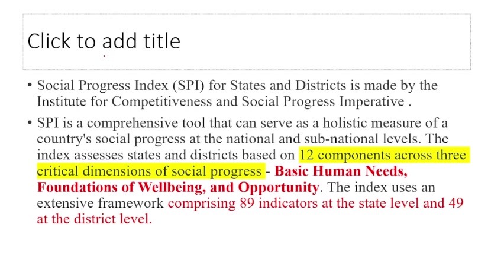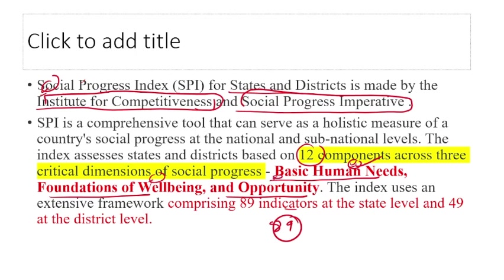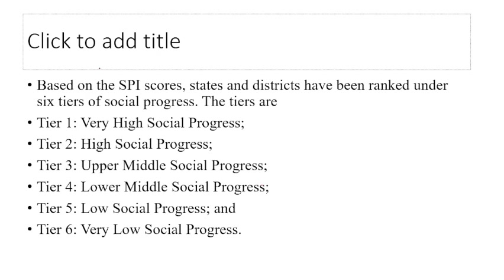The Social Progress Index (SPI) is important, especially for Jammu and Kashmir. The SPI for states and districts is made by the Institute for Competitiveness and Social Progress Imperative — private organizations. It covers 12 components across 3 critical dimensions: basic human needs, foundations of well-being, and opportunity — with 89 indicators. The data for India was released by the Economic Advisory Council to India.